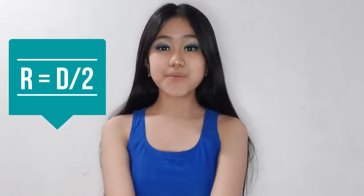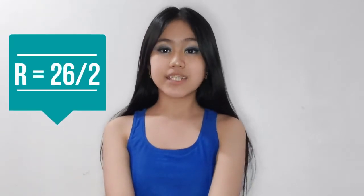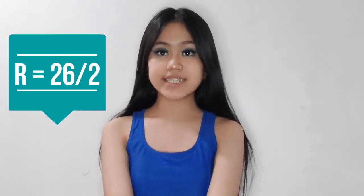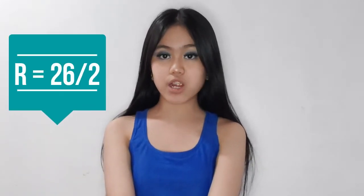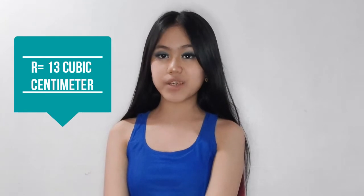So we compute the radius, which is half of the diameter. The formula to get the radius is: radius equals diameter over 2. Radius equals 26 cm divided by 2, so radius equals 13 centimeters.